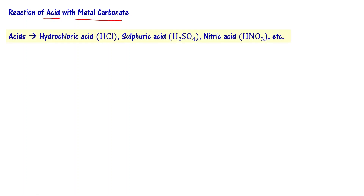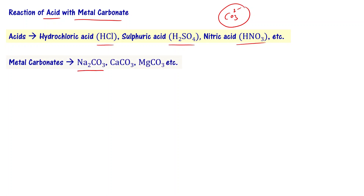Let us first start with the reaction of acids with metal carbonates. Acids include hydrochloric acid, sulfuric acid, and nitric acid. Metals include sodium, magnesium, and calcium, and the carbonate group is CO3 2-. So metal carbonates are sodium carbonate Na2CO3, calcium carbonate CaCO3, and magnesium carbonate MgCO3, etc.